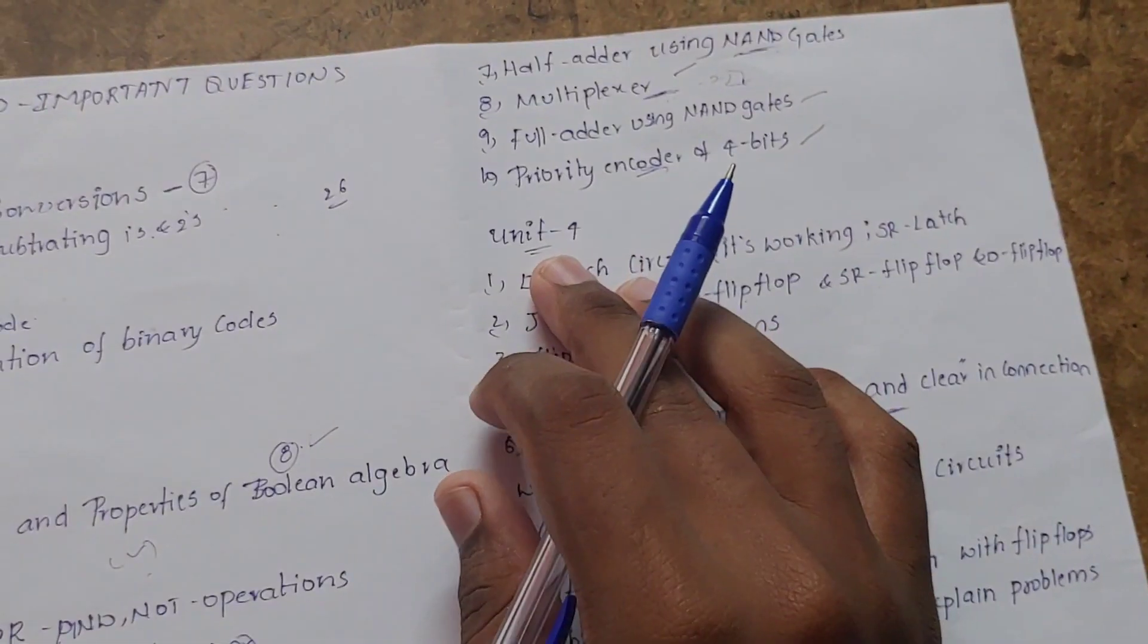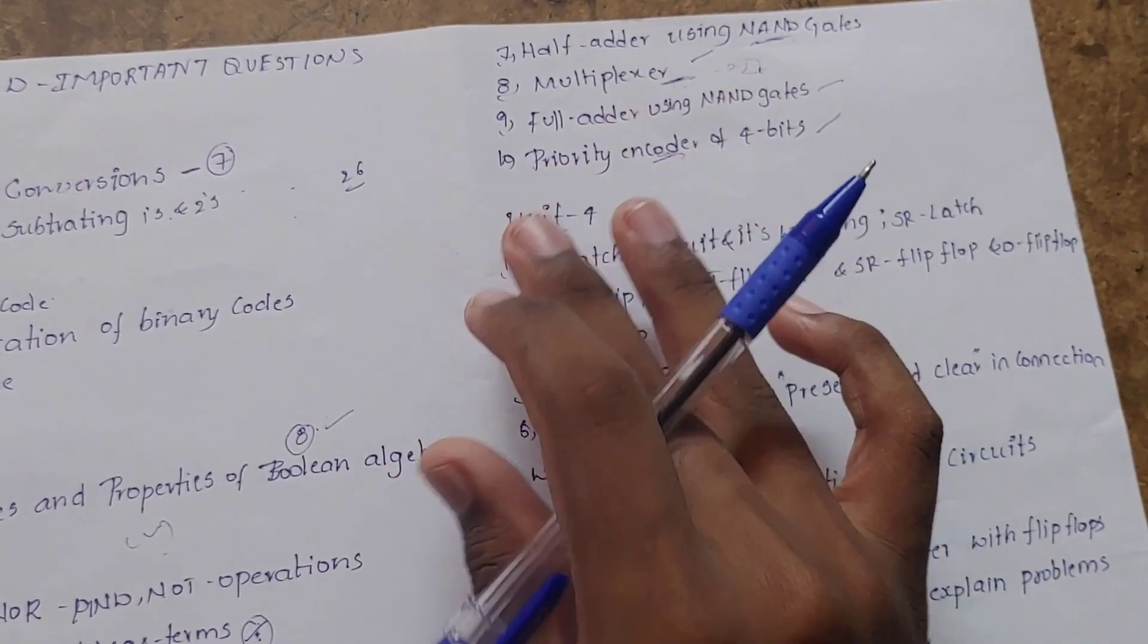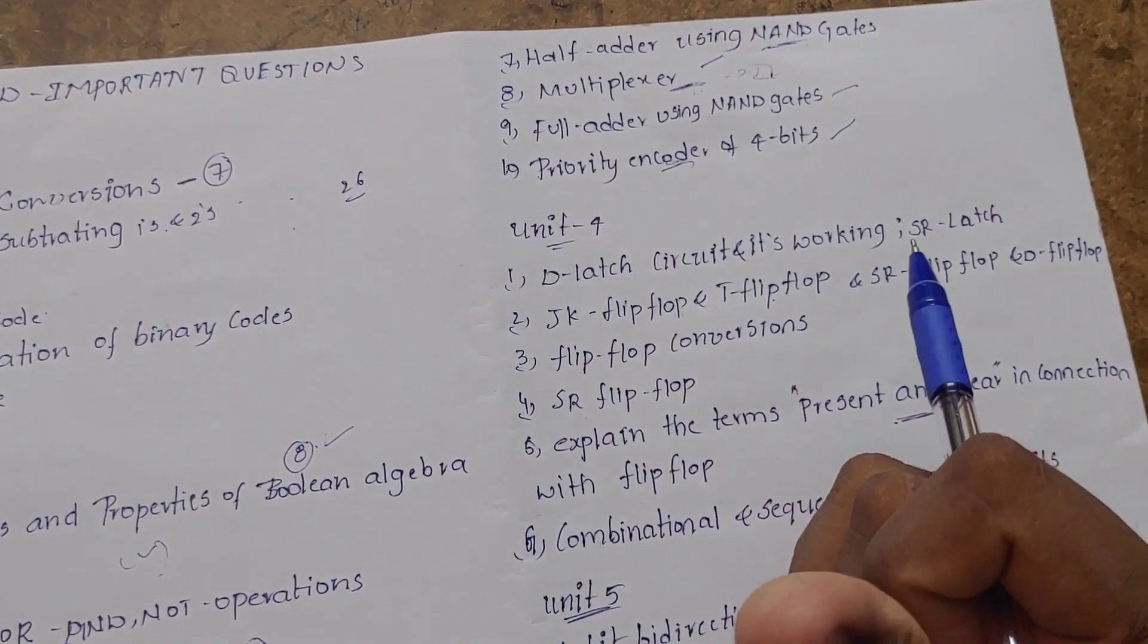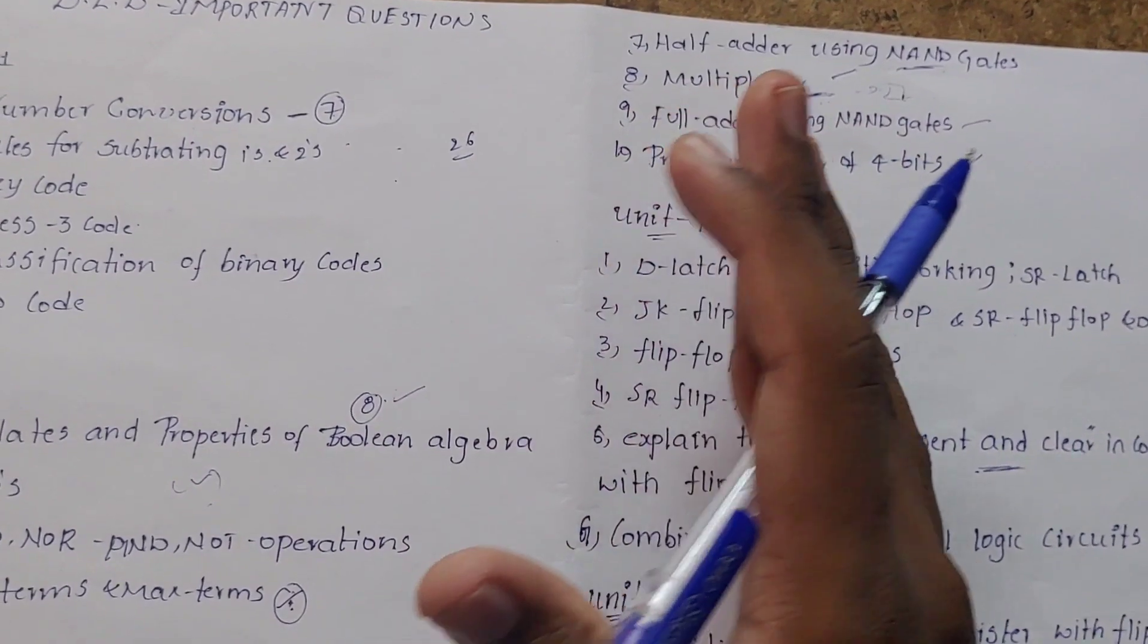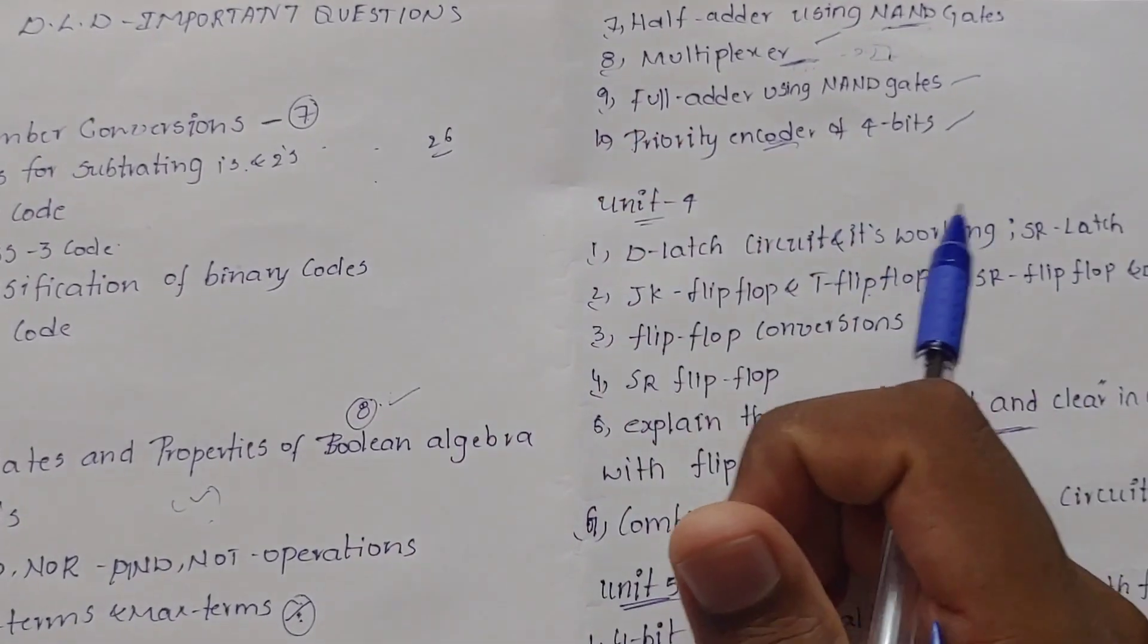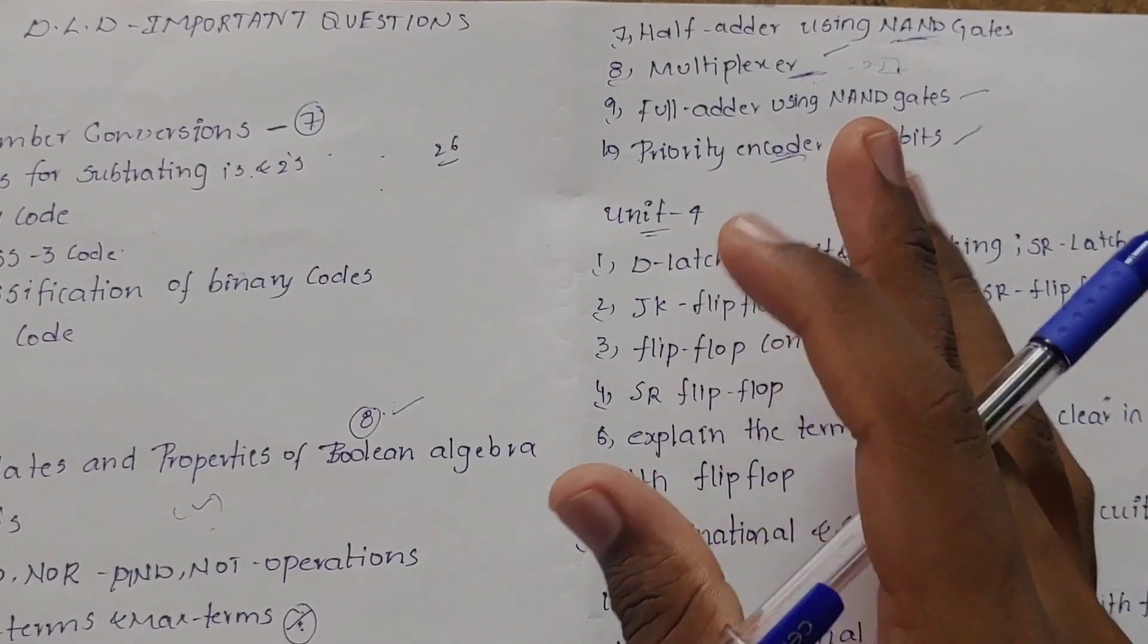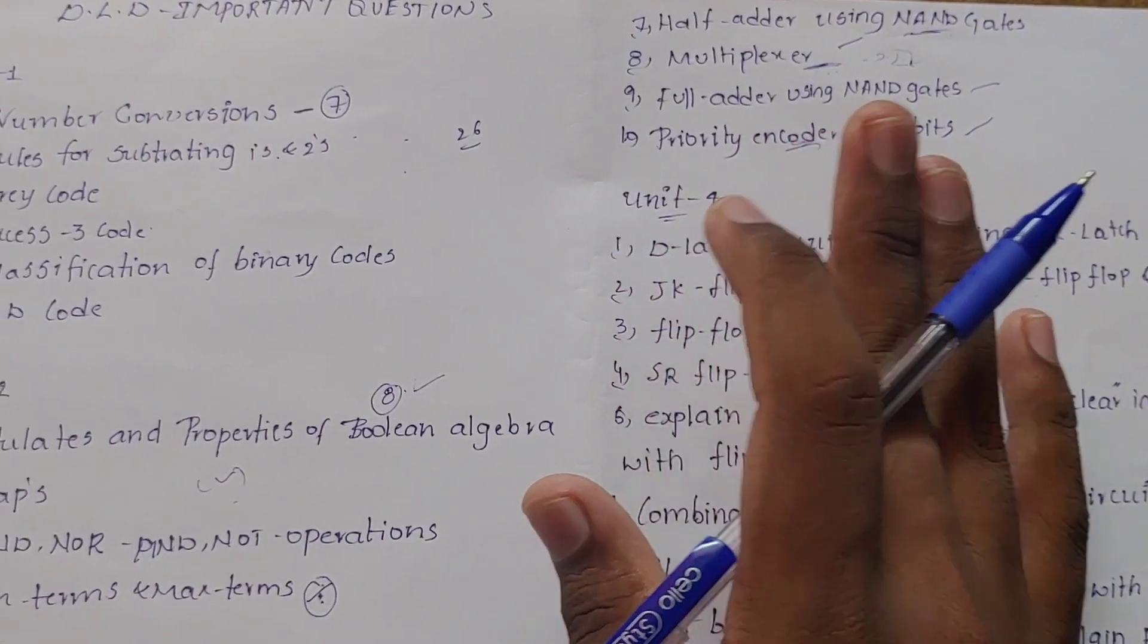One more thing, JNTK correlation unit 2 and unit 3 are in the playlist on the channel. Thank you guys. If you like, share and subscribe. At least give me your support by liking the videos. Thank you so much for watching this video.